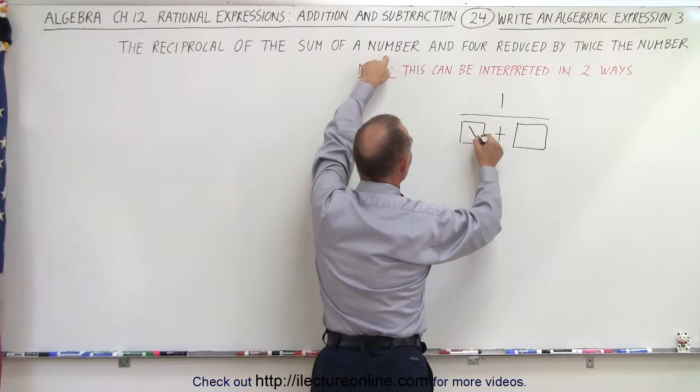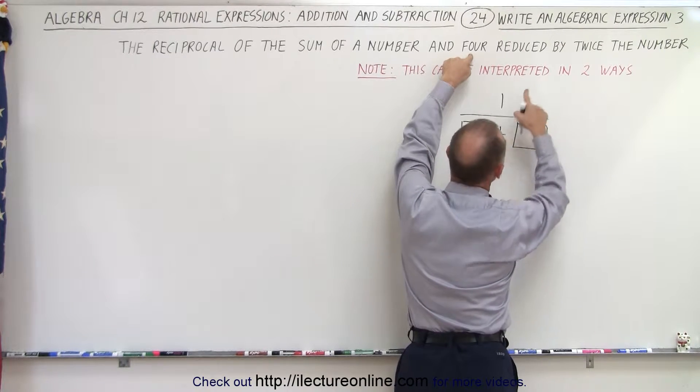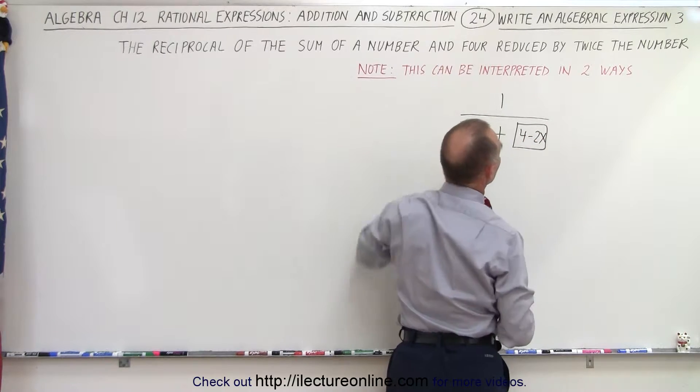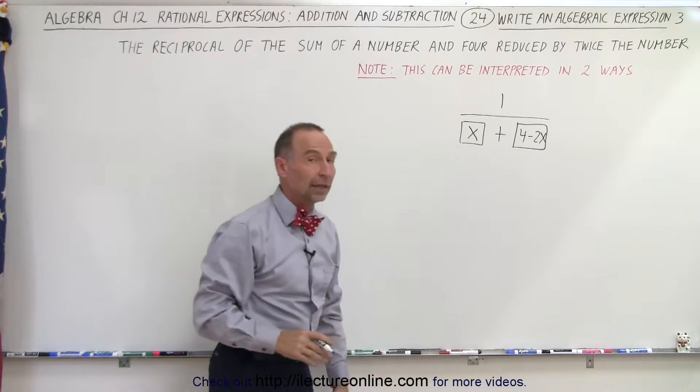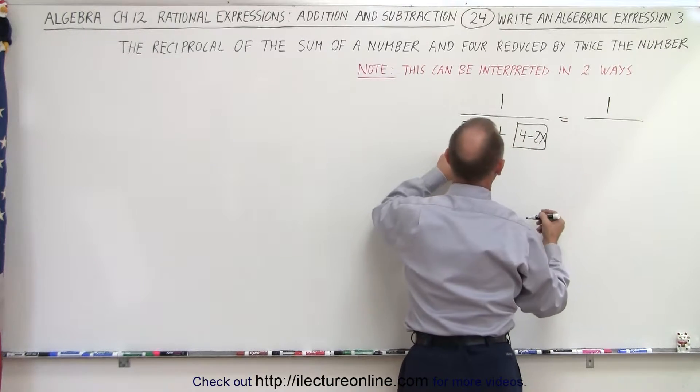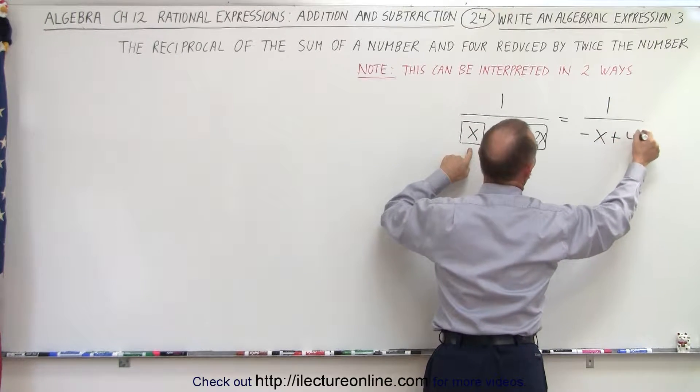An unknown number, let's call it x, plus 4 reduced by twice the number, 4 minus 2x. If we interpret this way this will look like 1 divided by x minus 2x which is minus x plus 4.